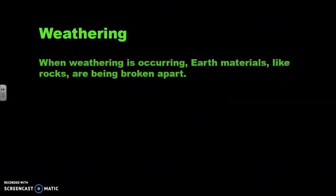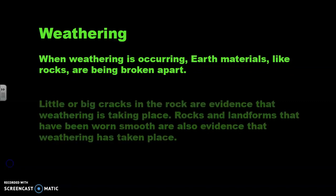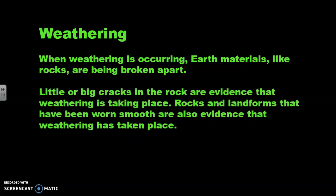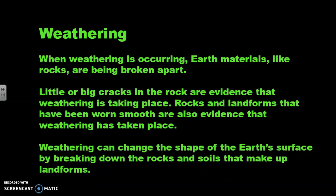Weathering. When weathering is occurring, Earth's materials like rocks are being broken apart. Little or big cracks in the rock are evidence that weathering is taking place. Rocks and landforms that have been worn smooth are also evidence that weathering has taken place. Weathering can change the shape of the Earth's surface by breaking down the rocks and soils that make up landforms.